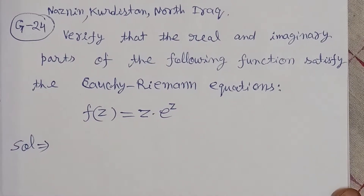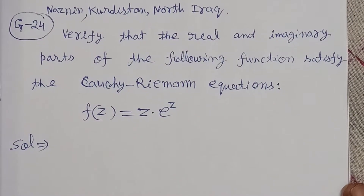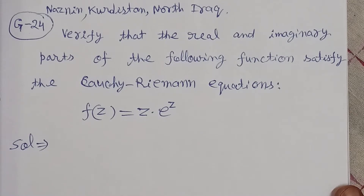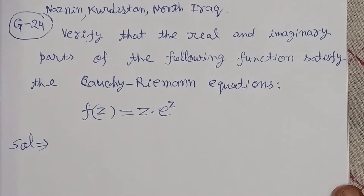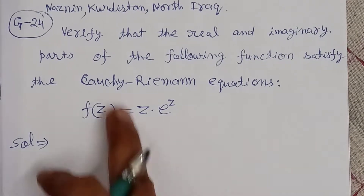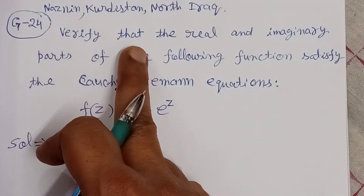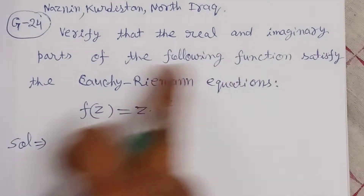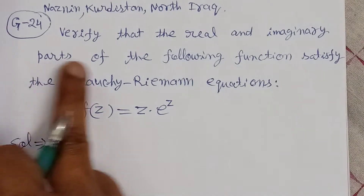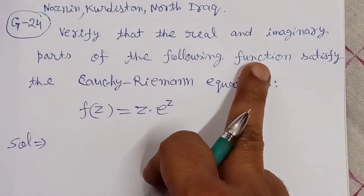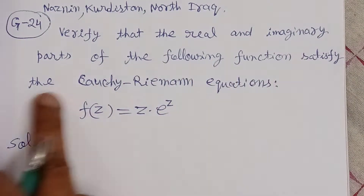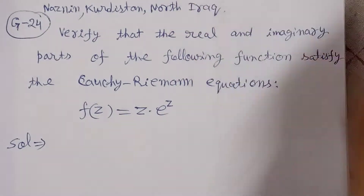Bismillahirrahmanirrahim. On the demand of Najdin from Kurdistan, North Iraq, this problem is related to the Cauchy-Riemann equation. We verify that the real and imaginary parts of the following function satisfy the Cauchy-Riemann equation.